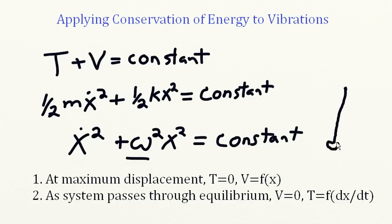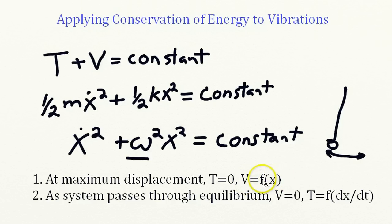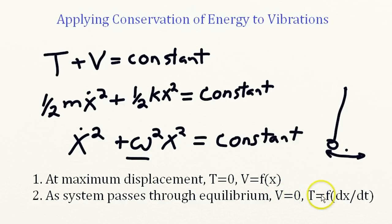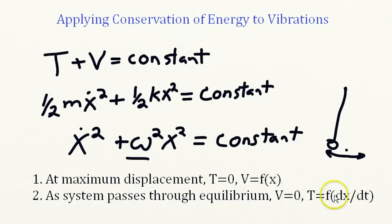The pendulum swings back and forth. At the maximum displacement, the velocity is zero, the kinetic energy is zero, and the potential energy is just a function of the position. Now as the system passes through equilibrium, here at the bottom, the potential energy will be zero, and the kinetic energy will be a function of the velocity. As the system passes through equilibrium, the total energy is constant. We can calculate it from the velocity at the zero point, and the pendulum swings through a cyclic motion.